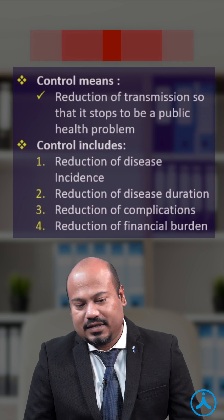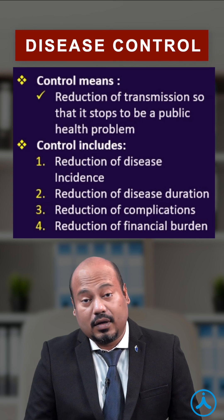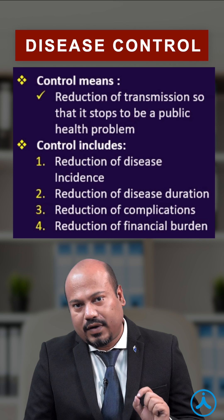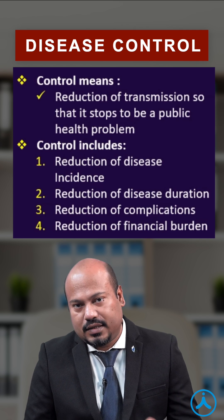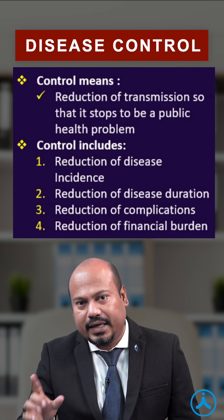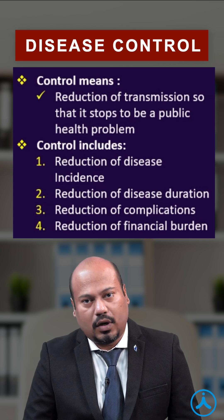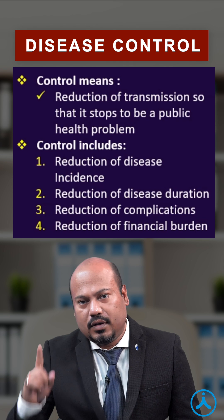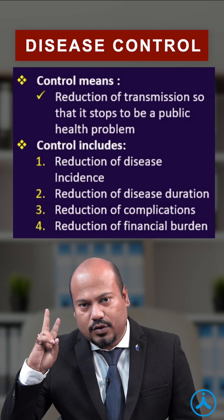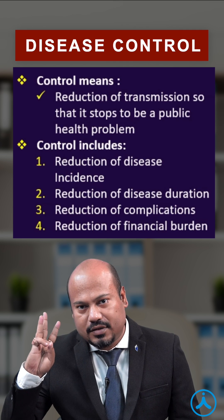So what is disease control? Control means reduction of transmission of disease to such an extent that it stops to be a public health problem. So how to control? We reduce incidence, duration, complications, and the financial burden.